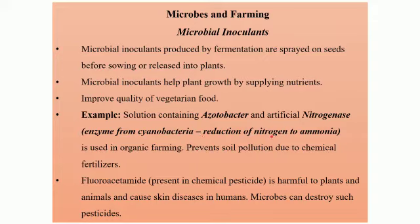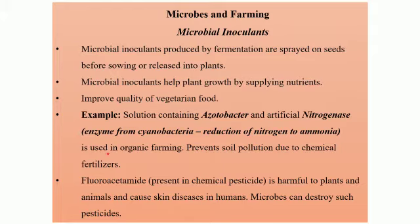When we convert nitrogen to ammonia, we are adding hydrogen. The formula of nitrogen is N₂ and that of ammonia is NH₃. So you are adding hydrogen to nitrogen — that is reduction, meaning addition of hydrogen. This ammonia is then mixed with soil and taken up by the plants for their growth. This is what is used in organic farming.